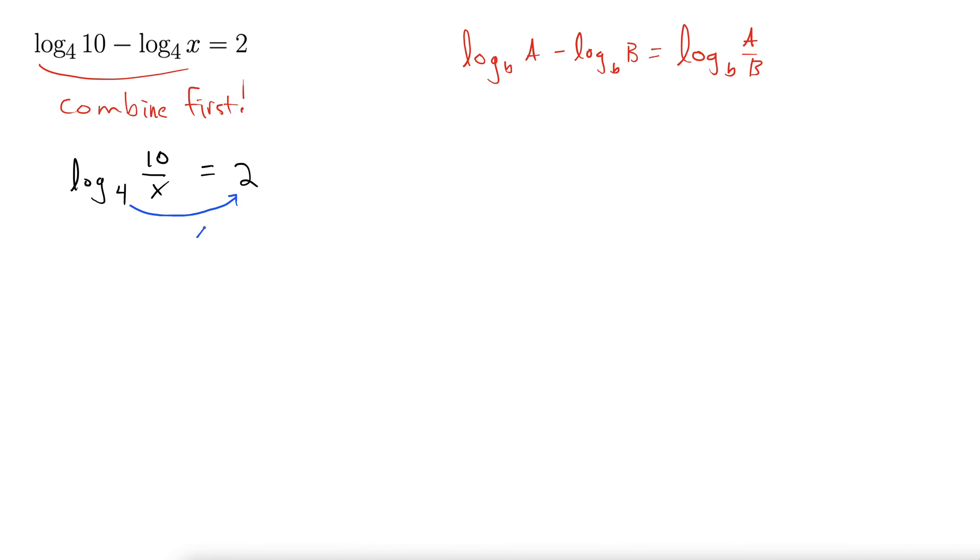We take 4 to the power of 2. So 4 to the power of 2 equals 10 over x.